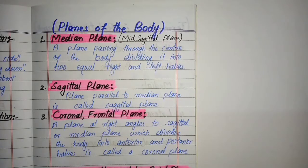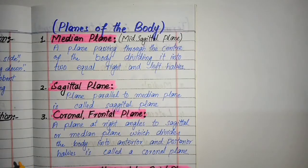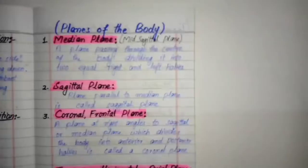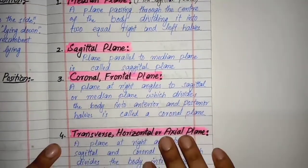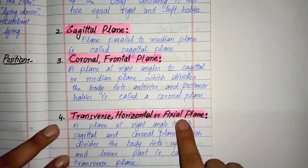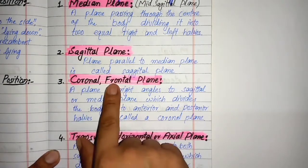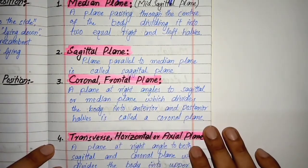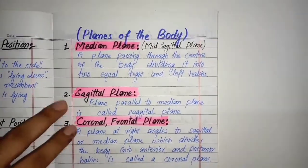Hello guys, welcome to the Concepts of Miracle. In today's video we are going to talk about the planes of the body — how many planes we have in our body, what are their names, and how they divide our body. These are very important to understand because a lot of MCQs are picked from here. I'm going to explain them very well. Some planes have two names, some have three names, so just keep watching the video till the end.